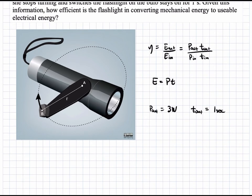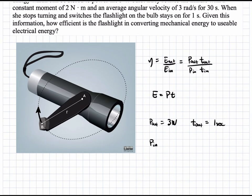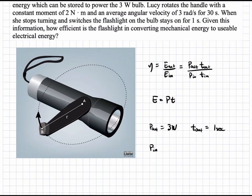The bottom quantity, we have P-in, which is not given in the question, but we can determine P-in. We're given the velocity, the angular velocity with which we spin the wheel, and the moment. With this, we can find the power with which we are putting into the system through this rotation.